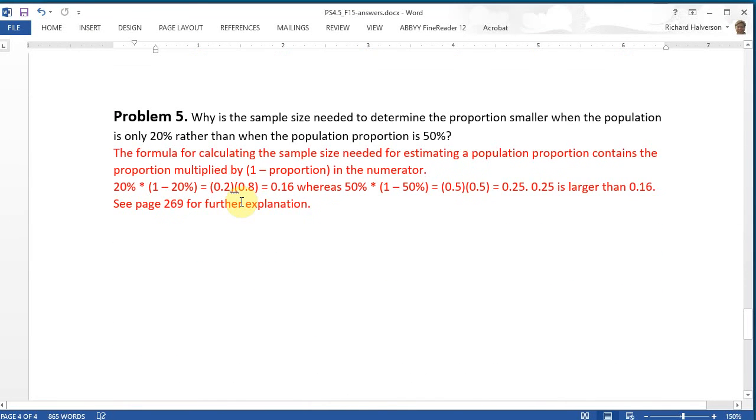So I would say that the formula for calculating the sample size needed for estimating a population proportion contains the proportion multiplied by 1 minus the proportion in the numerator. So for 20%, we've got 20% times 1 minus 20% is 0.16, whereas with 50%, it's 0.5 times 0.5, which ends up being 0.25, and 0.25 is greater than 0.16.